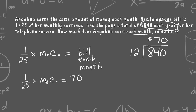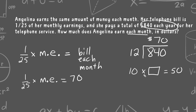The opposite of multiplication is division. For example, if ten times a blank equals fifty, to figure out what the blank is, we do the inverse of multiplication: fifty divided by ten equals five. This problem is no different.